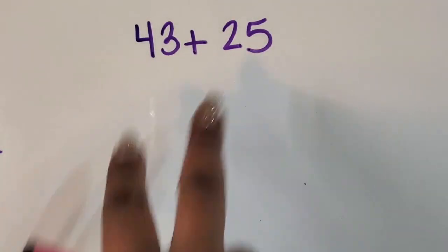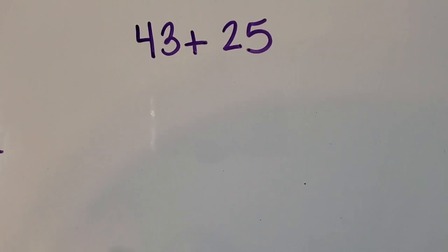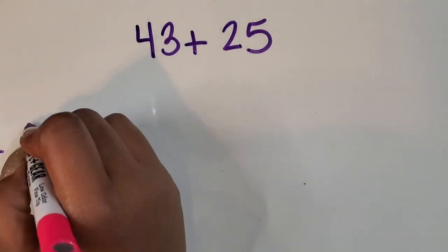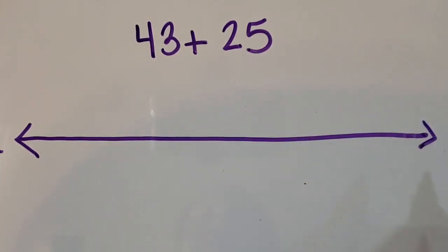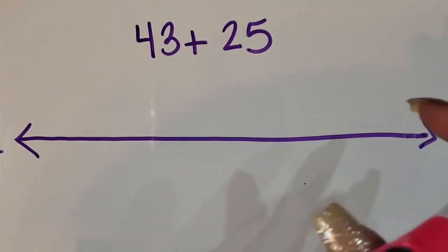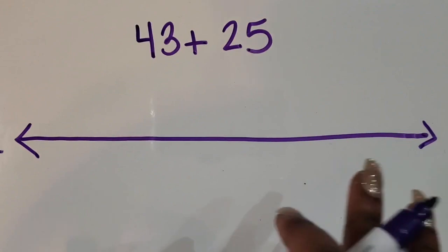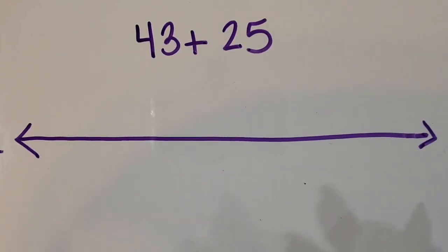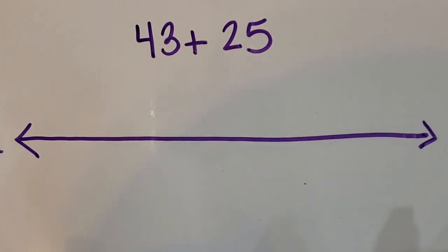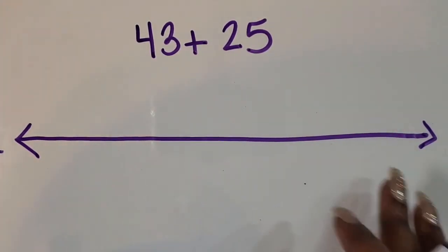We are going to add two two-digit numbers using an open number line. A number line is considered open when there are no numbers or increments already partitioned on the line, so you get to choose what numbers go on it. This strategy is really great for students because it allows them to be flexible with the numbers they're comfortable with. I'm going to show you a few ways — though there are many other ways a student might choose to solve the problem.